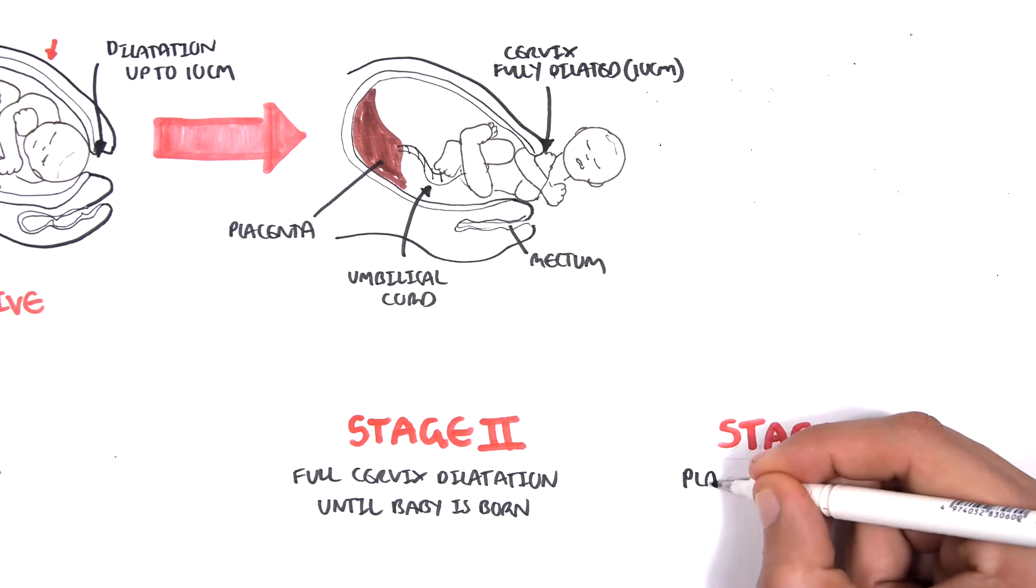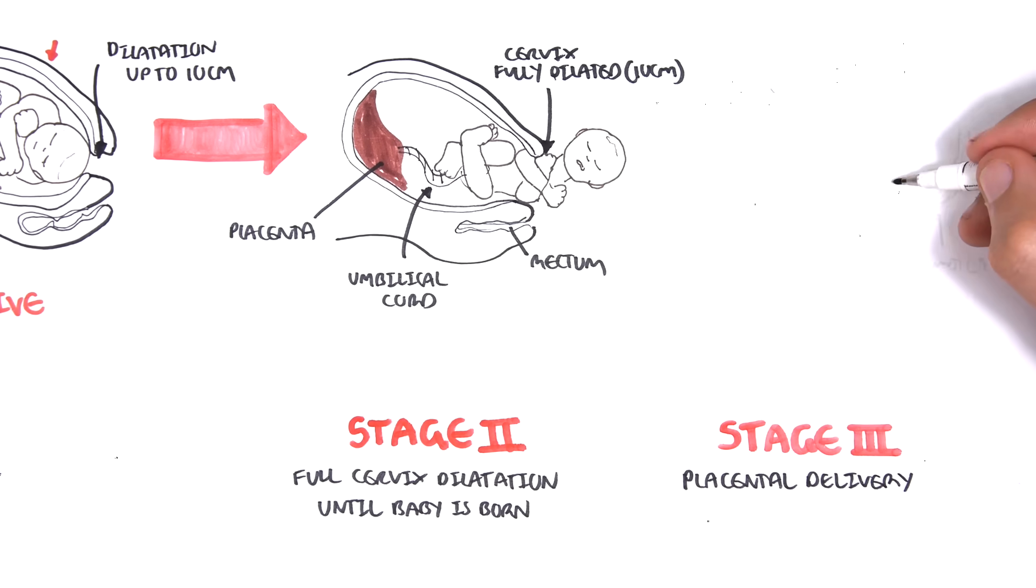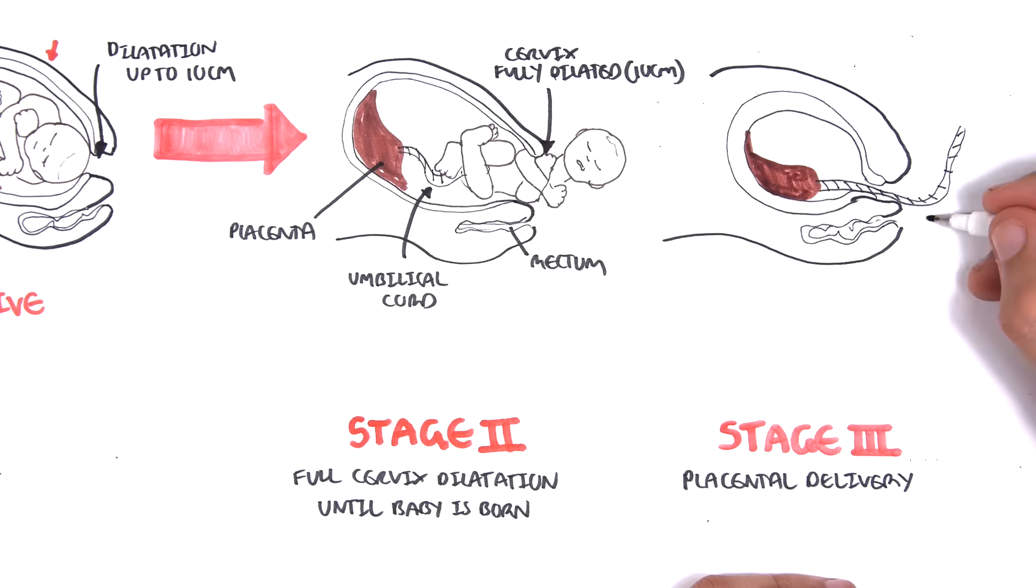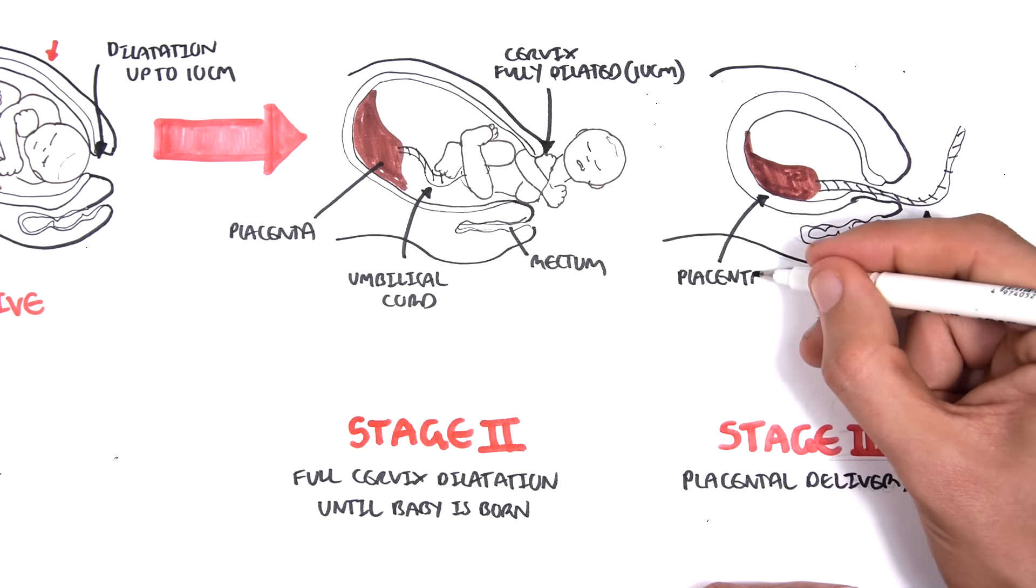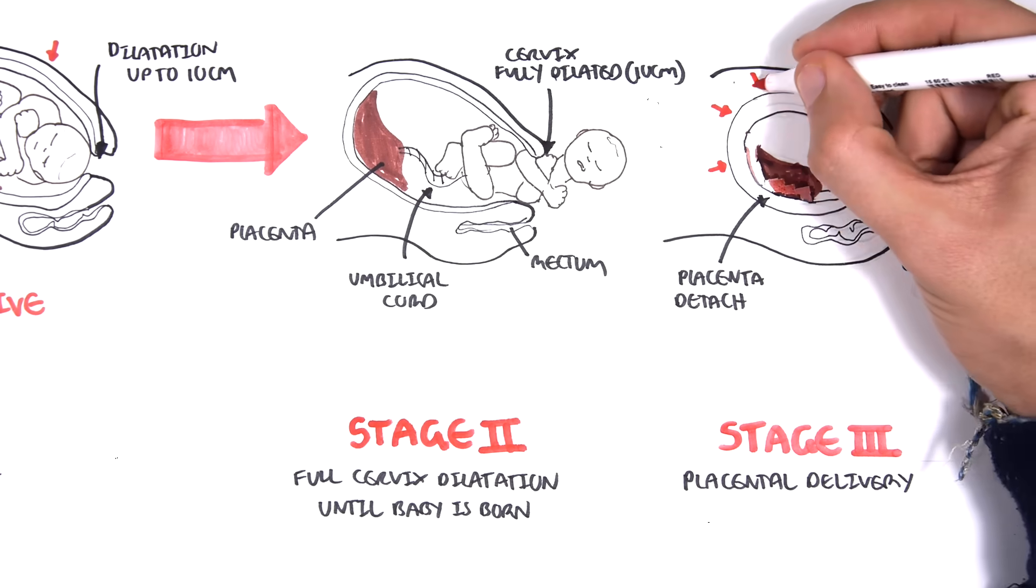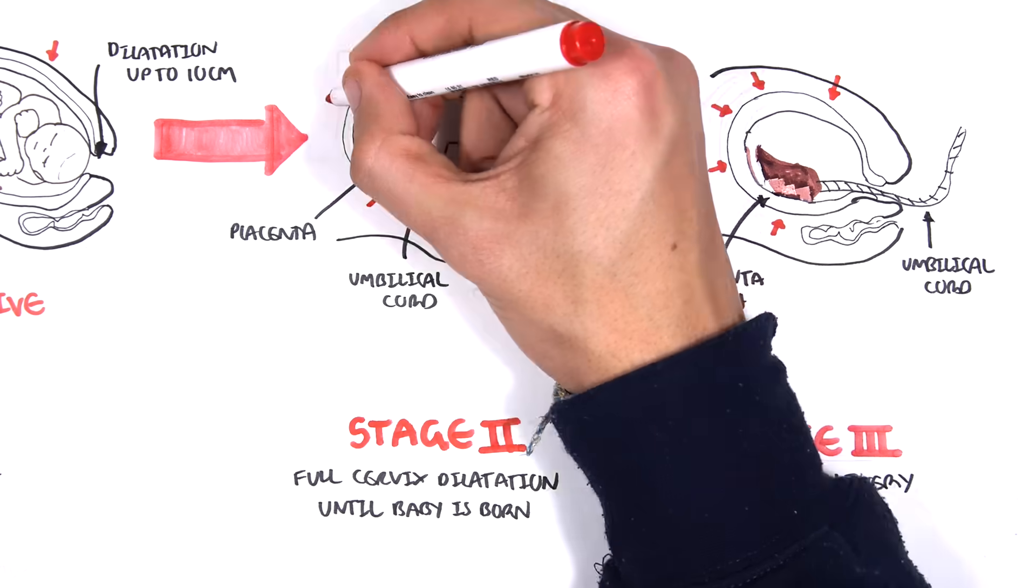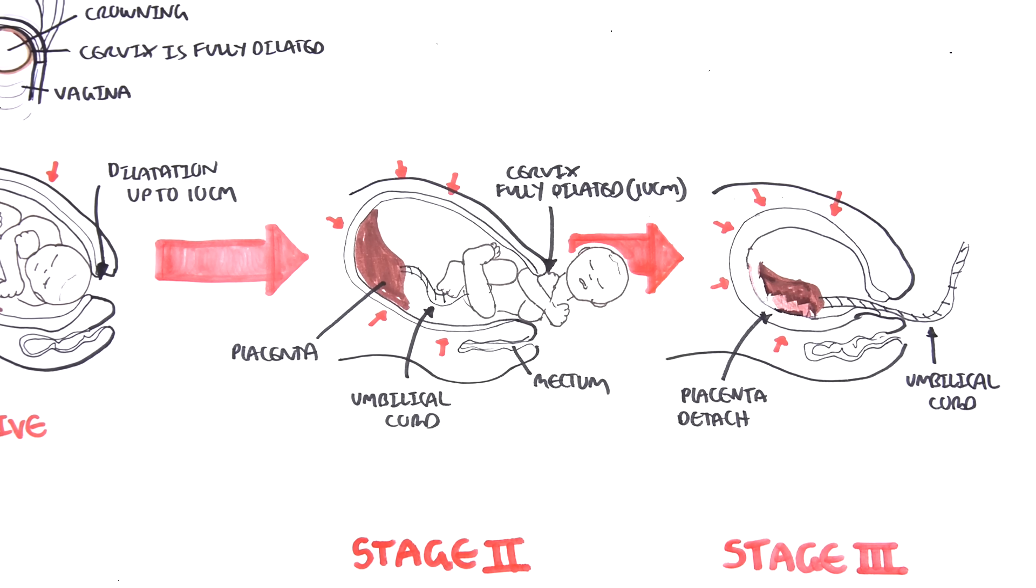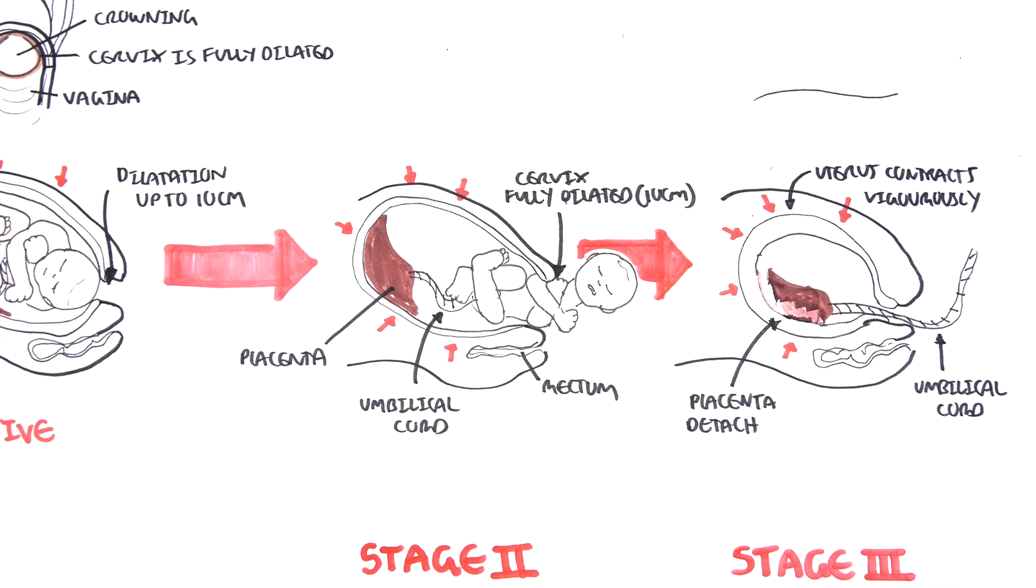Stage 3 of labor is essentially the delivery of the placenta. Here is the umbilical cord, which is the connection between the baby and placenta. In stage 3, the placenta is slowly detaching from the uterine lining. The uterus is still contracting. During this time, the mother is given an injection to stimulate the delivery of the placenta. The placenta has to be carefully delivered because it can cause hemorrhage if not delivered properly.